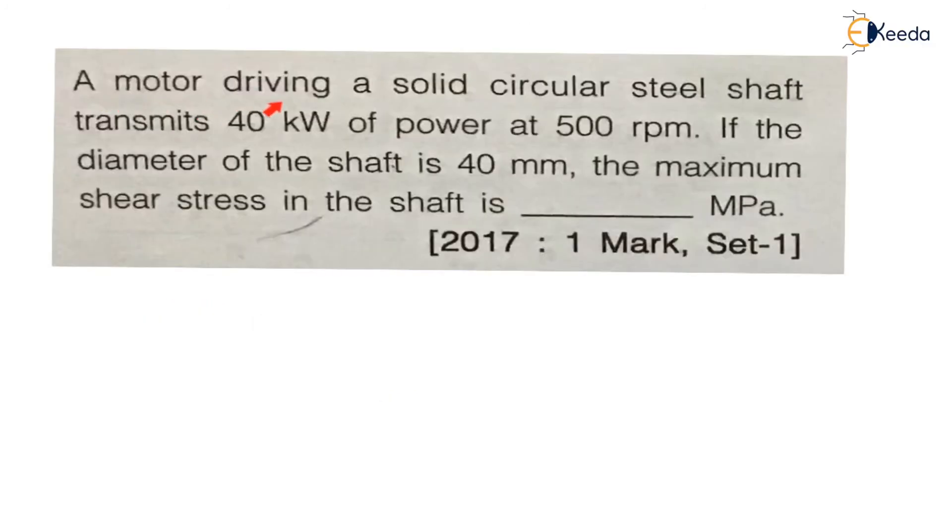The question is: A motor driving a solid circular steel shaft transmits 40 kilowatt of power at 500 rpm. The power transmitted is 40 kilowatt, which is 40×10³ watt, at N = 500 rpm. If the diameter of shaft is 40 mm, the maximum shear stress in the shaft is...